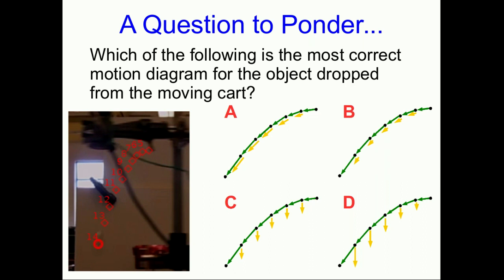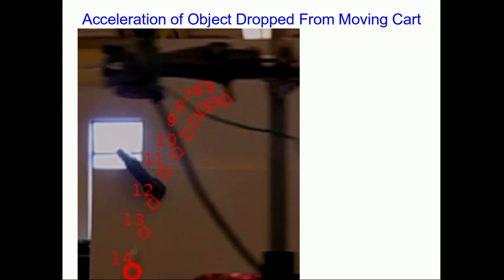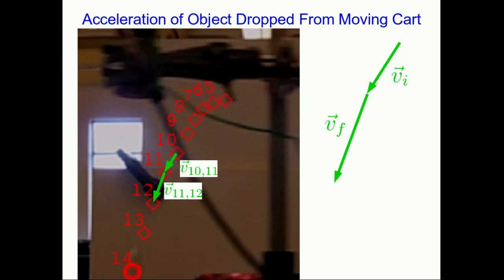What we're going to do is answer this question by directly analyzing the velocity vectors straight from the data. Here is the video analysis of the trajectory of the falling object, blown up nice and big so you can see what's going on. I'm going to use the velocity from 10 to 11 and the average velocity from 11 to 12 to estimate the direction of the acceleration at time 11. Here are those vectors scaled up so you can see the vector subtraction in detail.